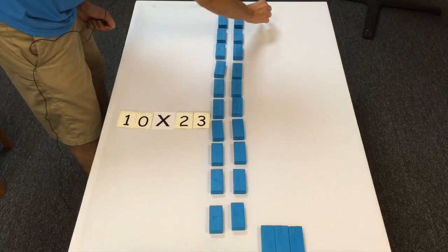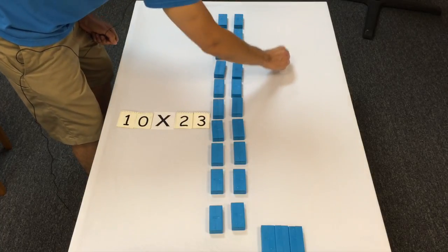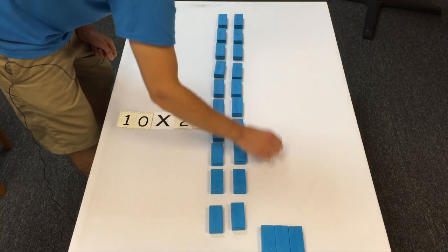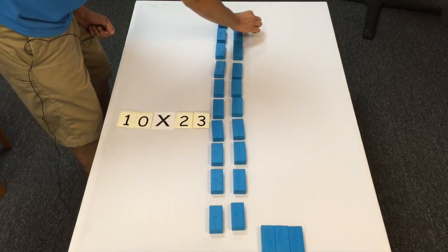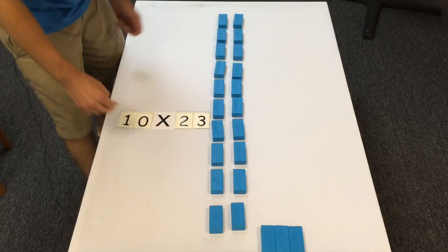Pretty amazing. So all of those ones, because we're multiplying by 10, there's the perfect amount of ones to make a new 10. So we had three ones. The ones all the way on the right, there were 10 ones, they made a new 10. The ones in the middle, there were 10 ones, they made a new 10. And then that third one, there were 10 ones, we had 10 of them, made a 10.